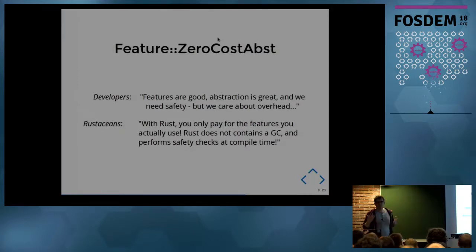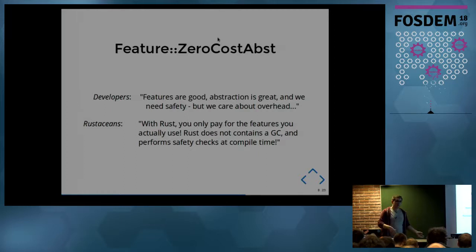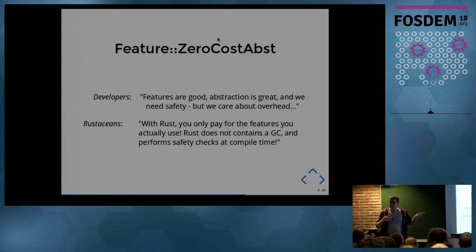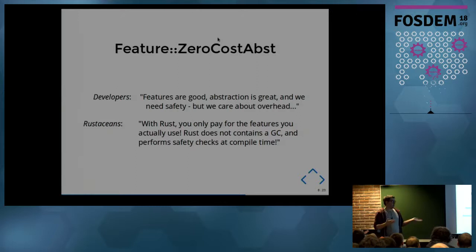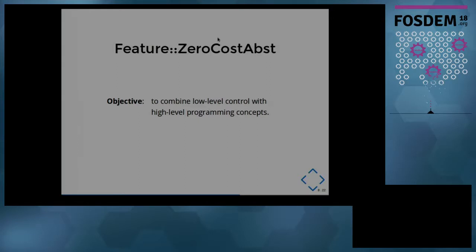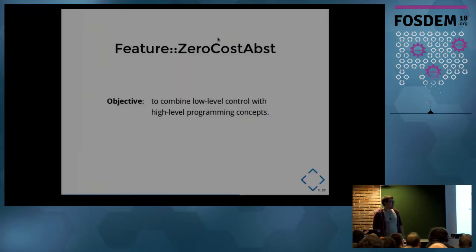Developers say: features are good, abstraction is great, and we need safety today. But we care about overhead. And Rustaceans — people using Rust, Rust maintainers, Rust developers — say: with Rust, you only pay for the features you actually use. Rust does not contain a garbage collector. The compiler will adjust the lifetime of variables and references at compile time and perform safety checks at compile time. So you obtain the same runtime performance as C++, but with safety. For zero-cost abstraction, you can combine low-level control with high-level programming concepts — and this is huge for a modern programming language.